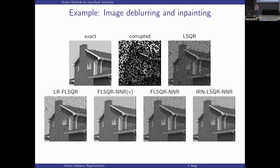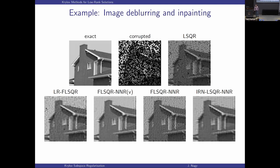Let me show some results. For an image corrupted by blurring and missing pixels: running hybrid LSQR gives one result; putting low-rank Kronecker constraints gives something better; using nuclear norm constraints gives even a bit better still. We don't have this in the toolbox yet — that's why I'm not showing a live demo — but you can get a pretty good solution out.